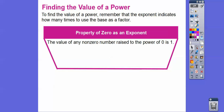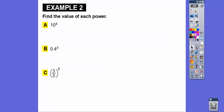To find the value of a power, the exponent tells us how many times to use the base as a factor — we just multiply that number however many times the exponent says. Also, any number raised to the zero power always equals 1. For example, 7 to the 0 equals 1, and (2/3) to the 0 equals 1. You'll find out why in high school.